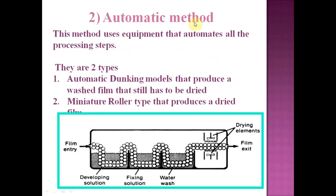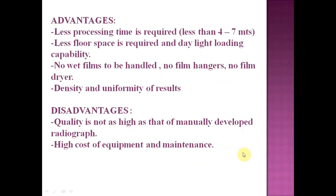The automatic method uses equipment that automates all the processing steps. There are two types: automatic dunking models, which produce a washed film that still has to be dried, and miniature roller-type processors that produce a dry film. The film goes through developing, fixing, washing, and drying automatically. Advantages: less processing time (four to seven minutes), less floor space, no wet films, no hangers, no dryers, and uniform density. Disadvantage: quality is not as high as manually developed ones, and the cost of equipment and maintenance is high.